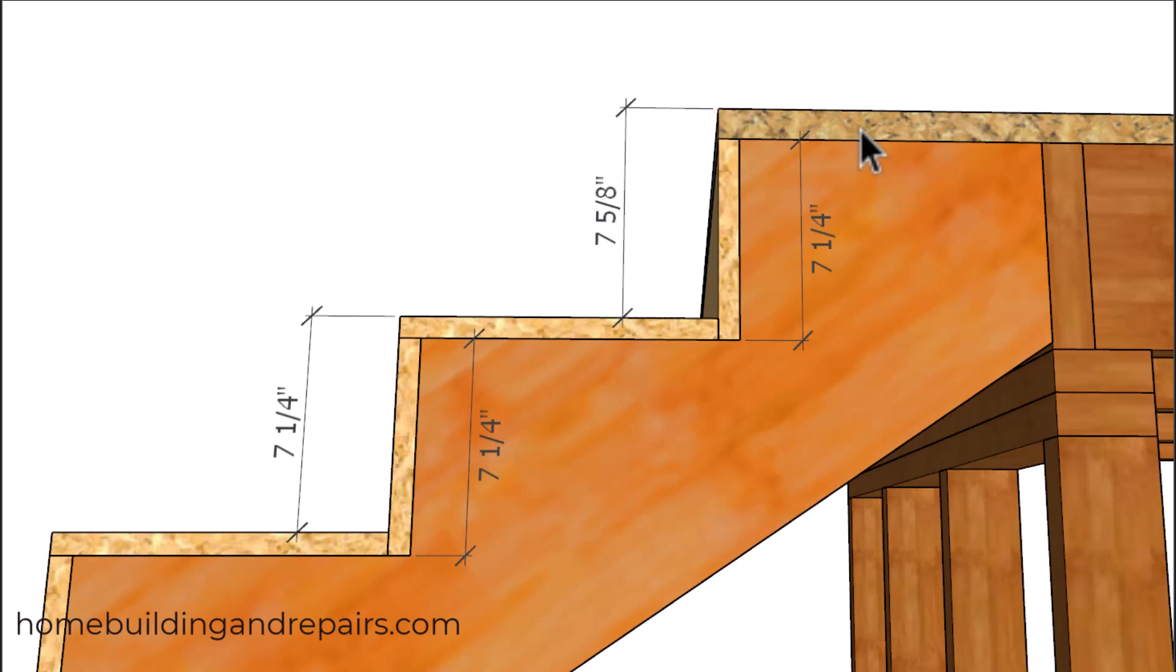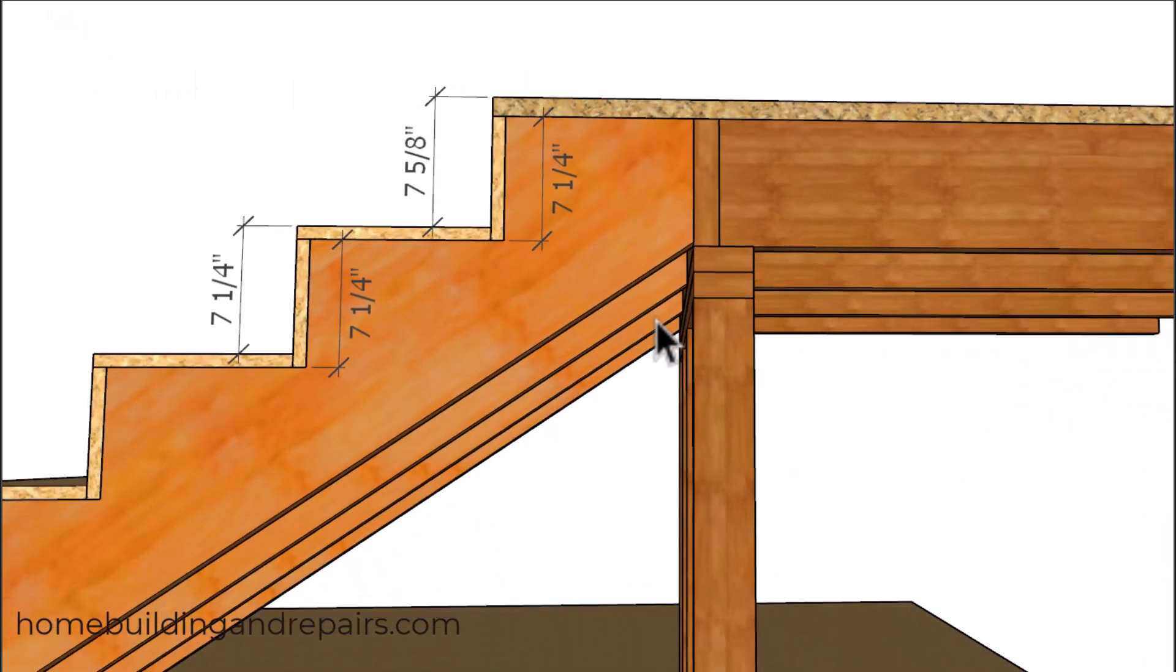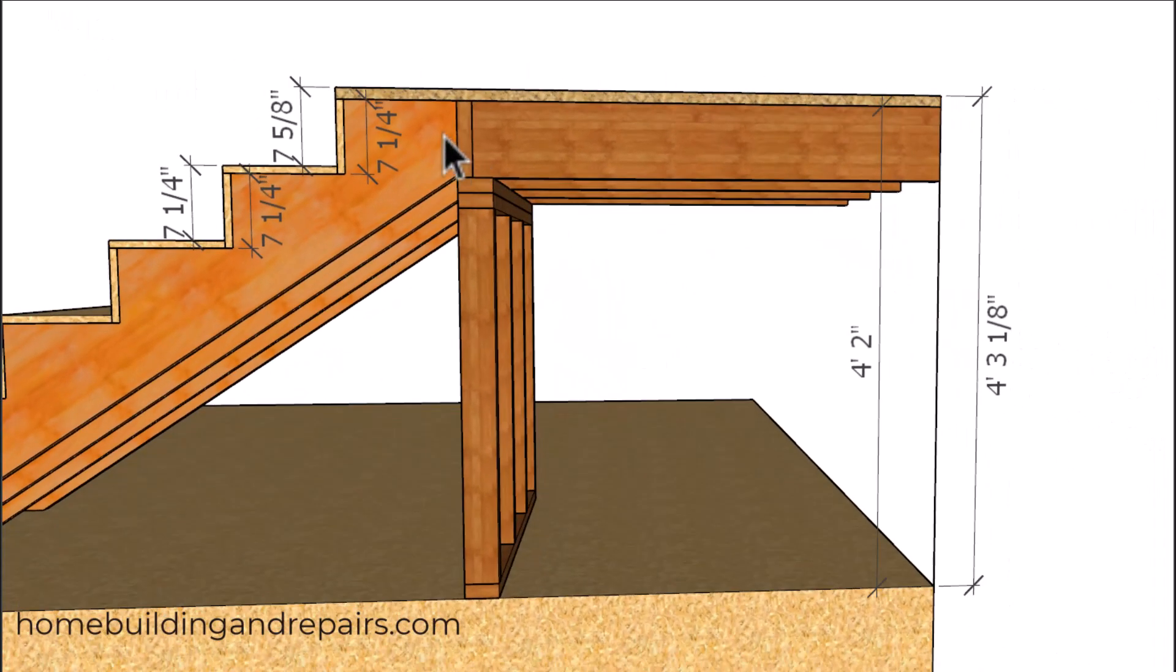But that's not going to be the case if we change the height of the floor sheathing to one and an eighth inch plywood. I think this is the problem that the individual was having. If I just simply added one and an eighth inch plywood to the top of this without lowering the